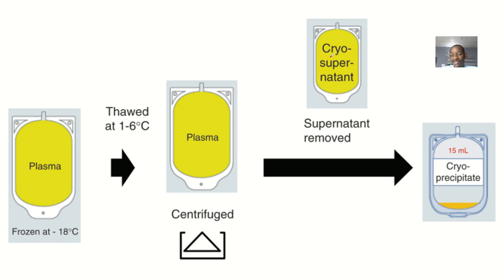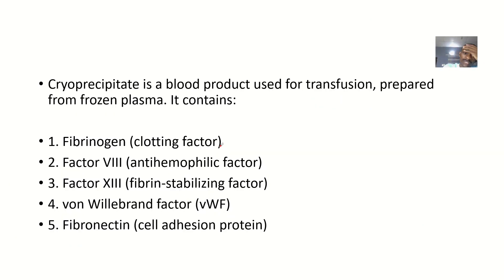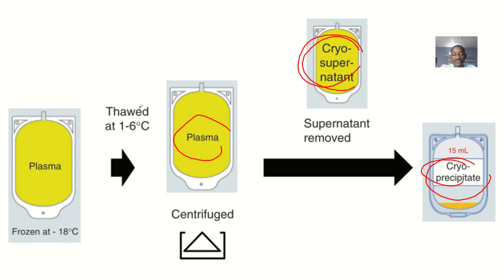Cryoprecipitate is actually found from plasma — specifically, it is a blood product used for transfusion and it is prepared from frozen plasma. So if you have plasma, you do one or two things on it and you can come up with the cryoprecipitate.